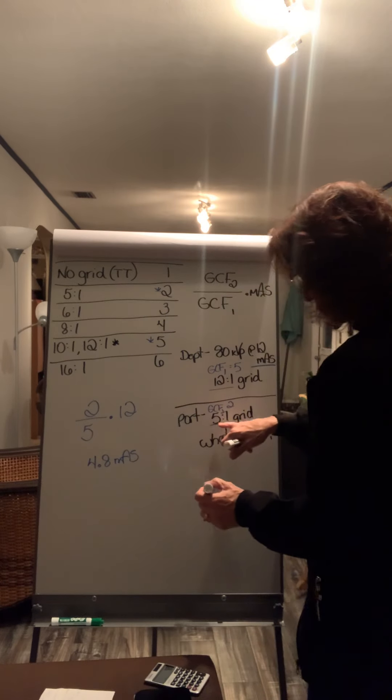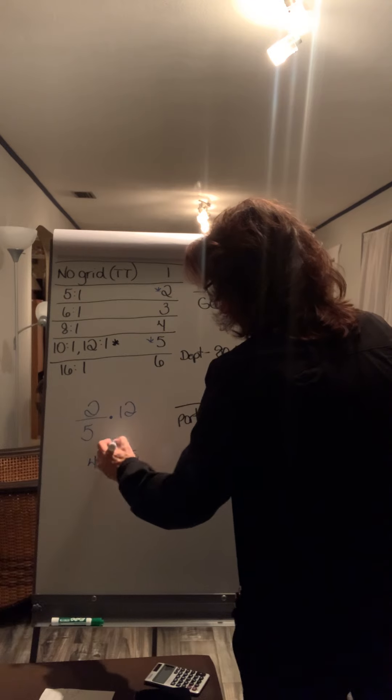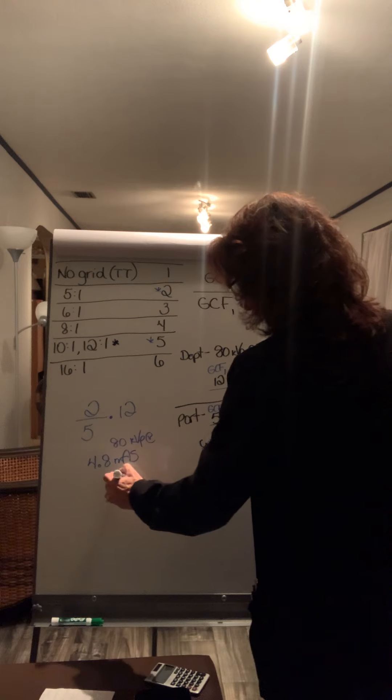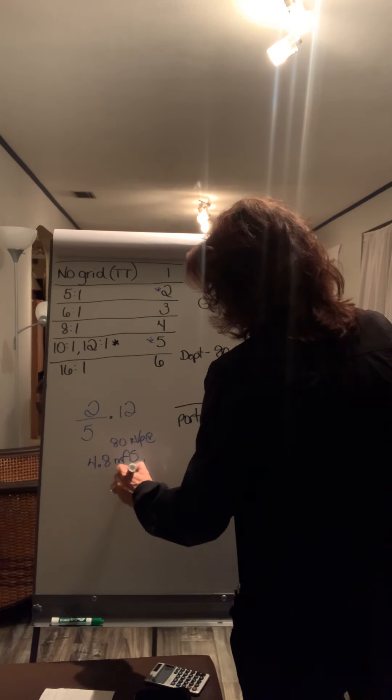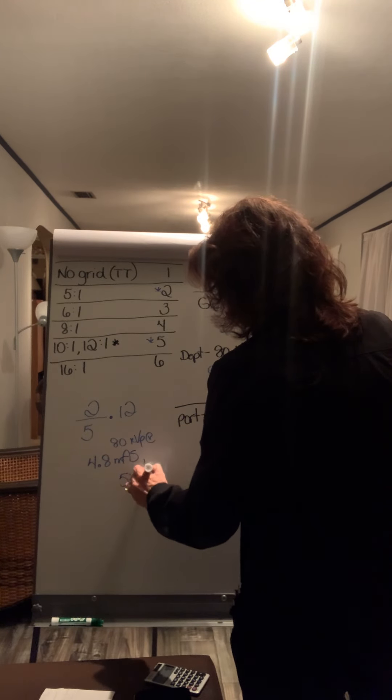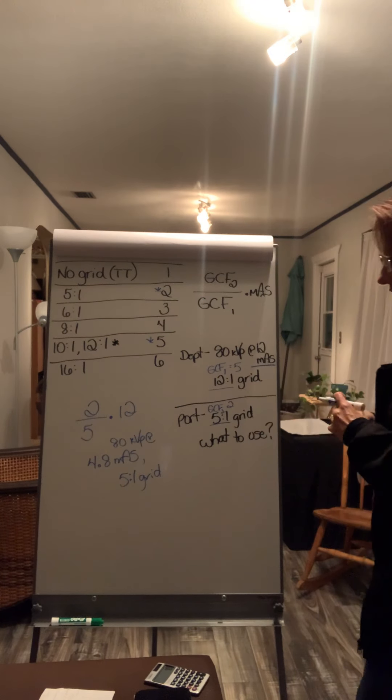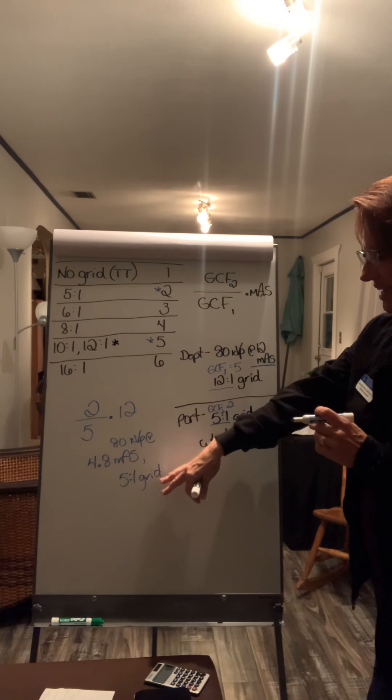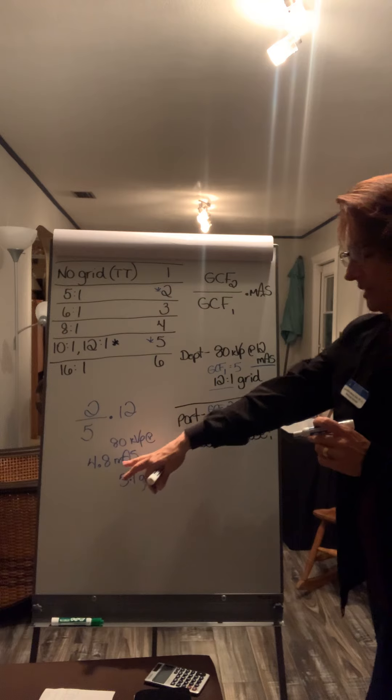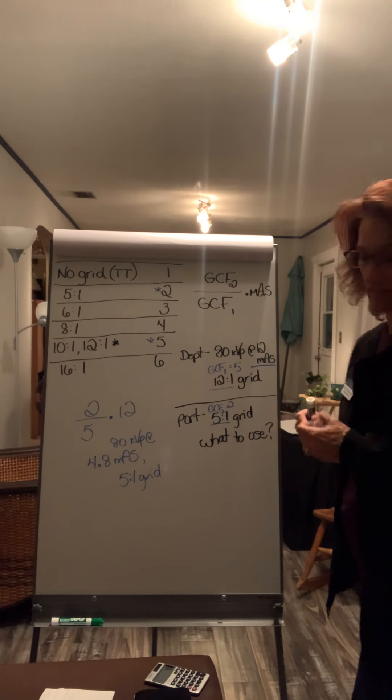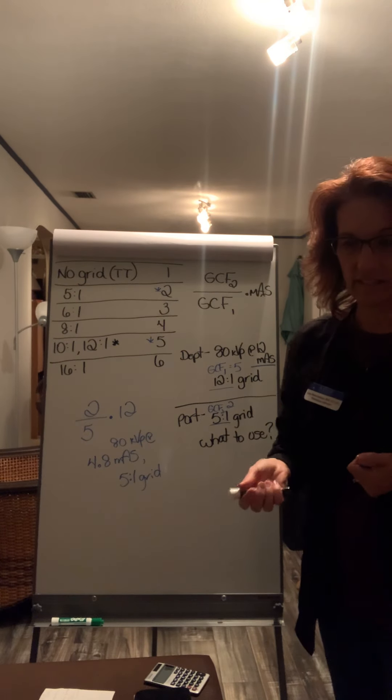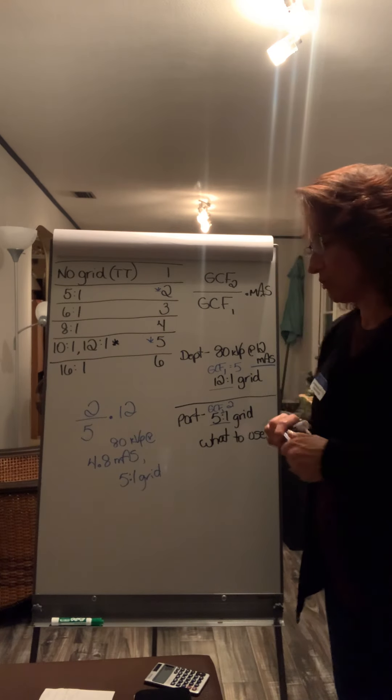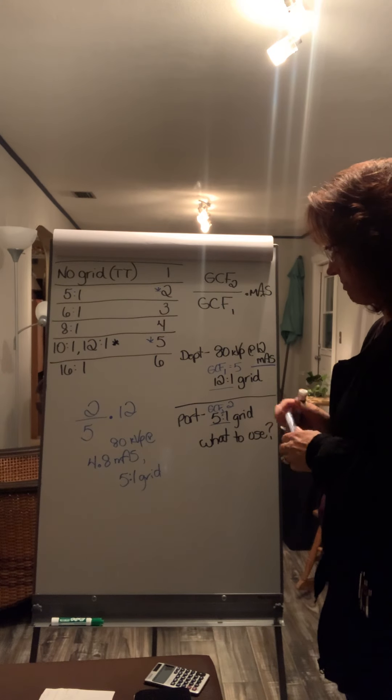So on portables, you would do 80 kVp at 4.8 mAs on a five to one grid. So the grid ratio went from 12 mAs, which was higher down to a five to one. So the mAs value went lower, which makes sense because if you're having less lead content, less scatter absorption, more photons get through. So you don't need as much quantity.